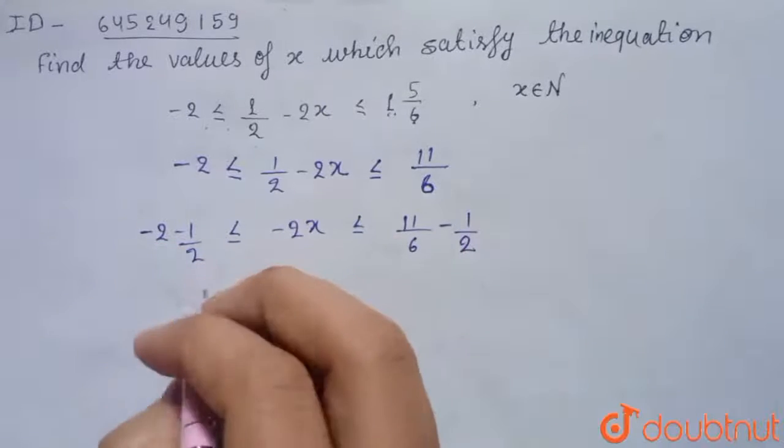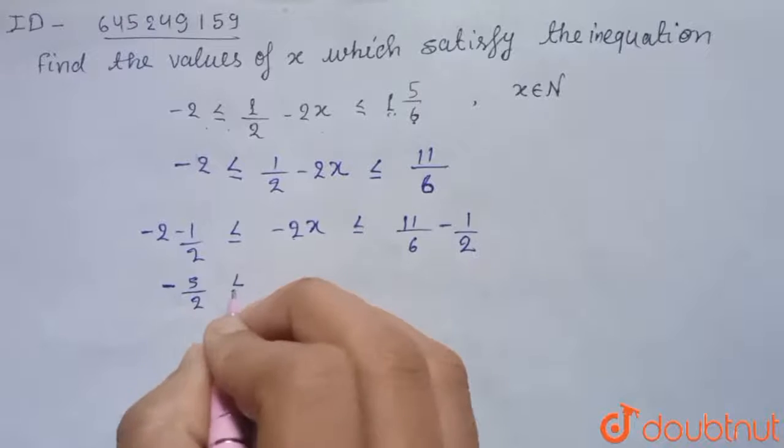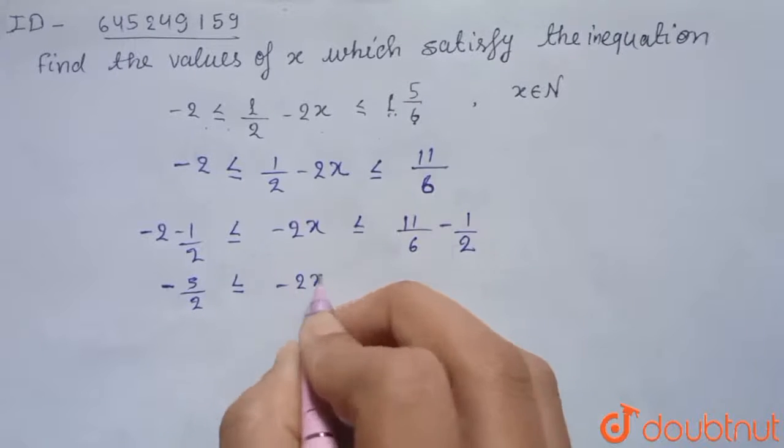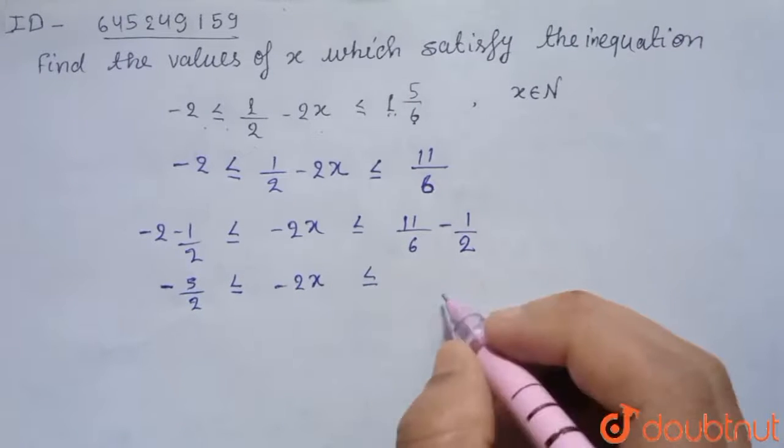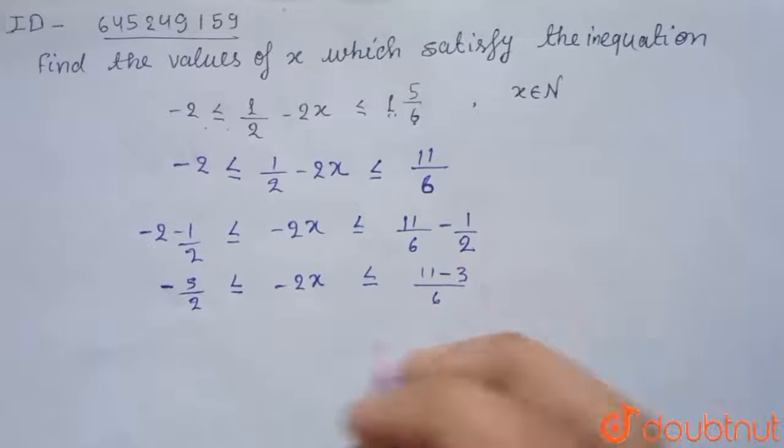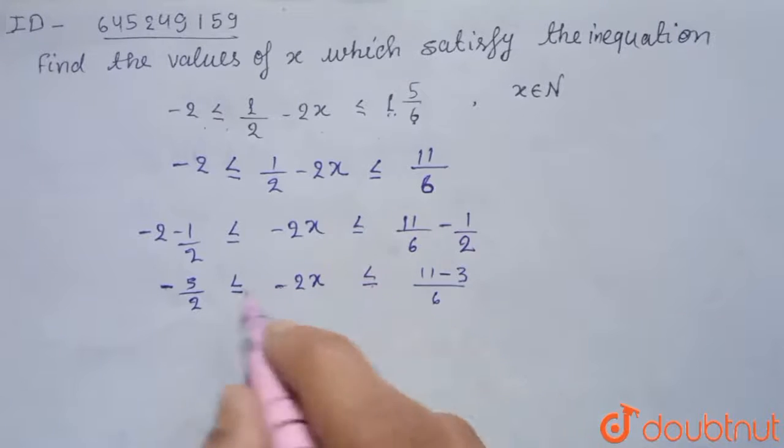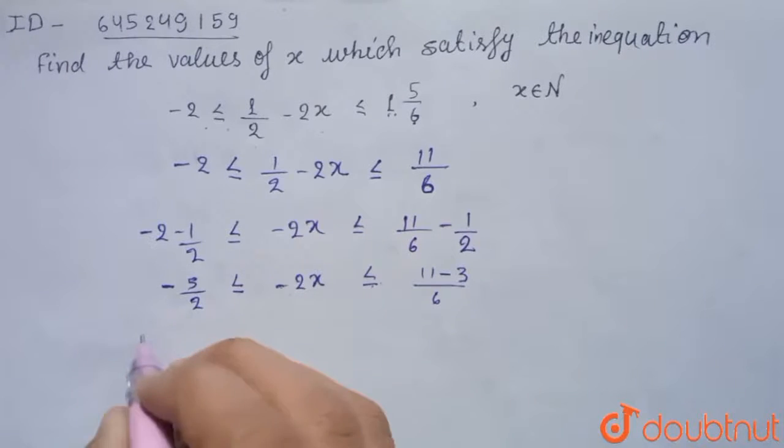So from this we get this will become -5/2 ≤ -2x ≤ from this we get 11 - 3 that is 8/6.